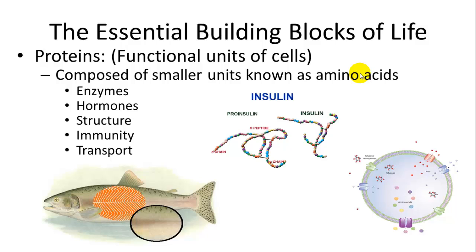Proteins act as the functional parts of cells and throughout the body. The polymer of proteins is called a polypeptide, and the monomer is known as amino acids. There are 20 different types of amino acids, and how you string them together makes different types of proteins. Proteins can be used as enzymes, hormones, structural components forming the main elements of muscles, immunity in the immune system, and to help transport substances through cells or through the blood. They are an active part of chemical processes.